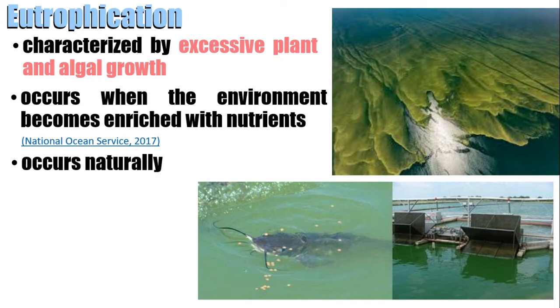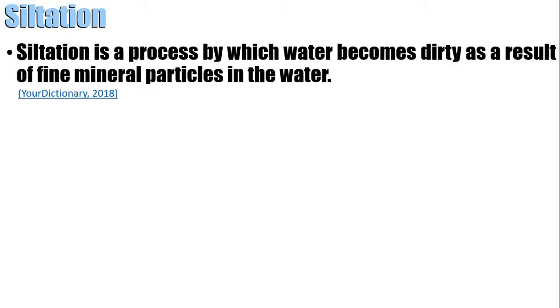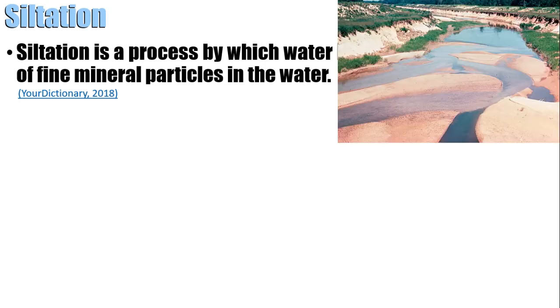This is called cultural eutrophication. The next word is siltation. Siltation is a process by which water becomes dirty as a result of fine mineral particles in the water — basically, they are sediments.